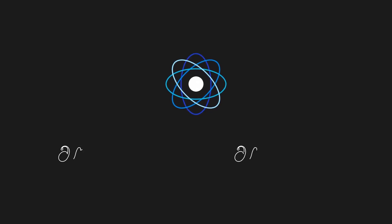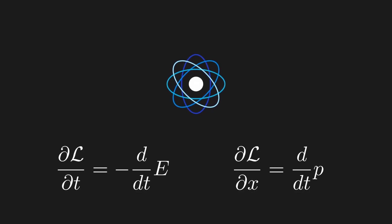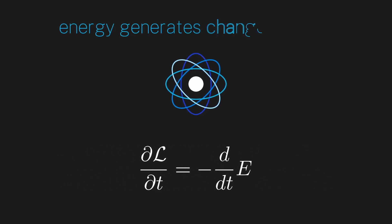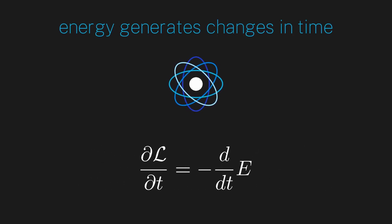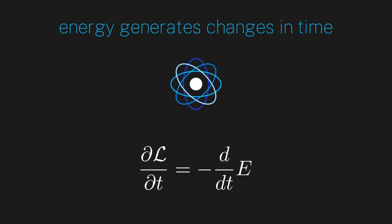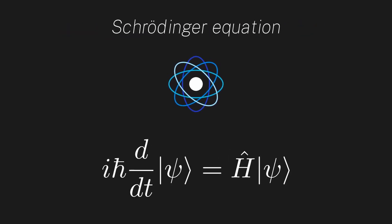Hi everyone. Last episode we learned what generators are and how they show up in classical physics. Importantly, we found that energy generates changes in time of our classical state. This episode I want to connect this to quantum mechanics to finally derive and demystify the Schrödinger equation. So with that, let's go ahead and get started.